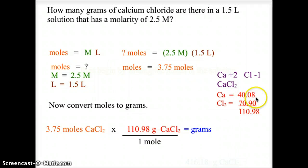Calcium is 40.08, and chlorine is 70.90, which is 35.45 times 2. Adding these together gives us a gram formula mass of 110.98.